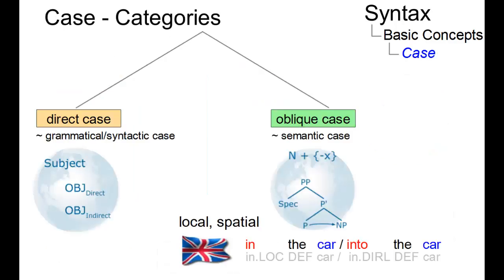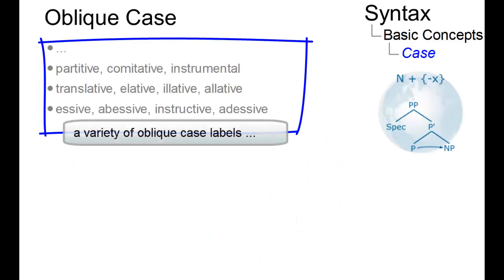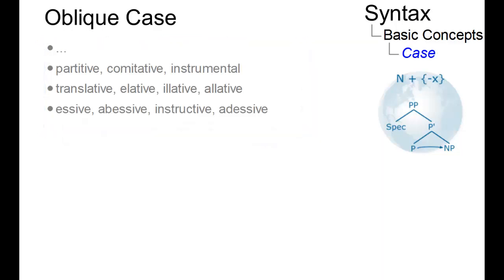The oblique case is used to mark a range of functions, for example local and spatial functions. Oblique cases have more independent semantic content than direct cases, and they are less dependent on structural roles. Nevertheless, some of the direct cases can serve oblique functions as well.